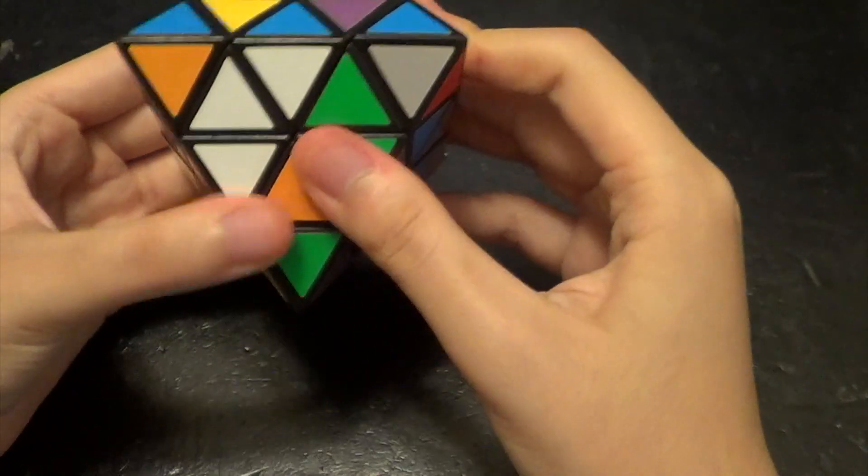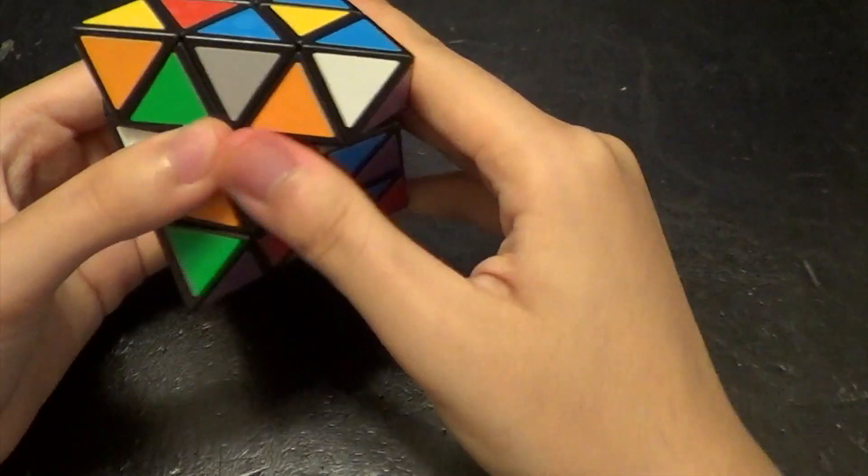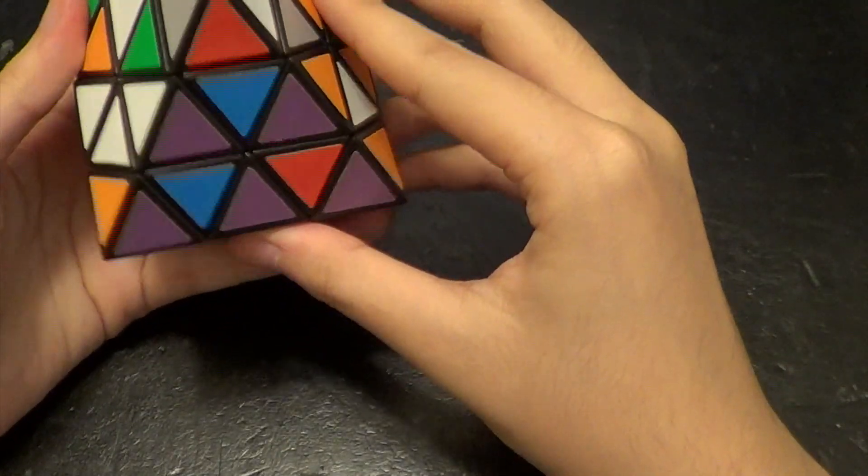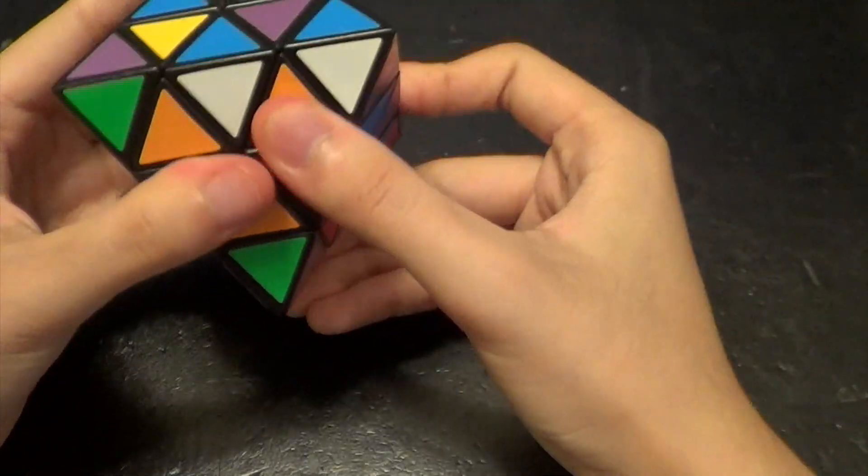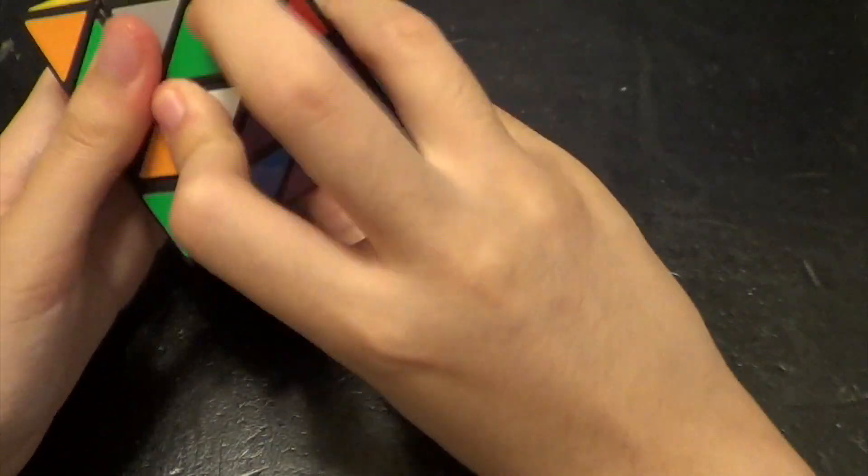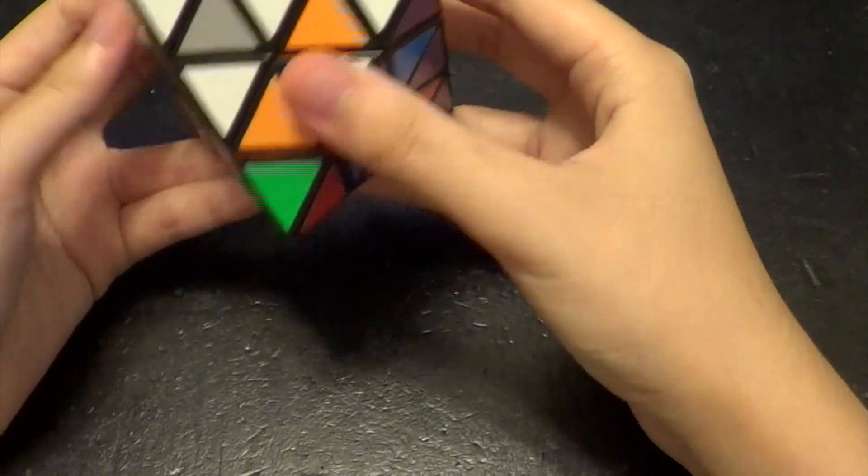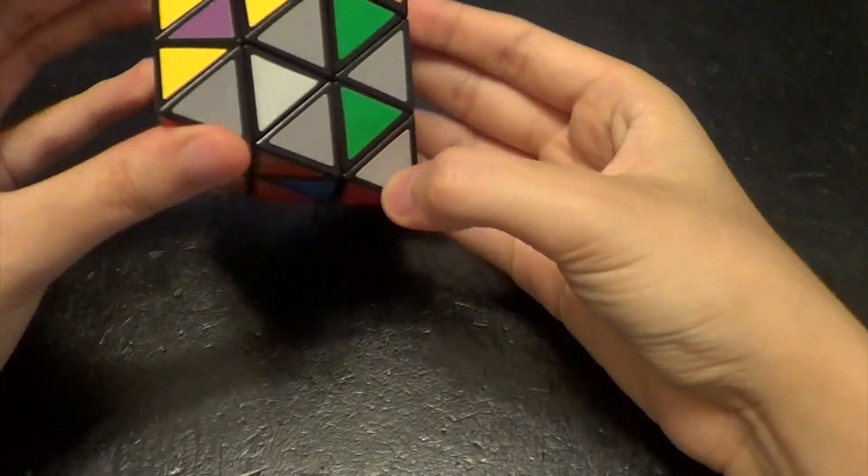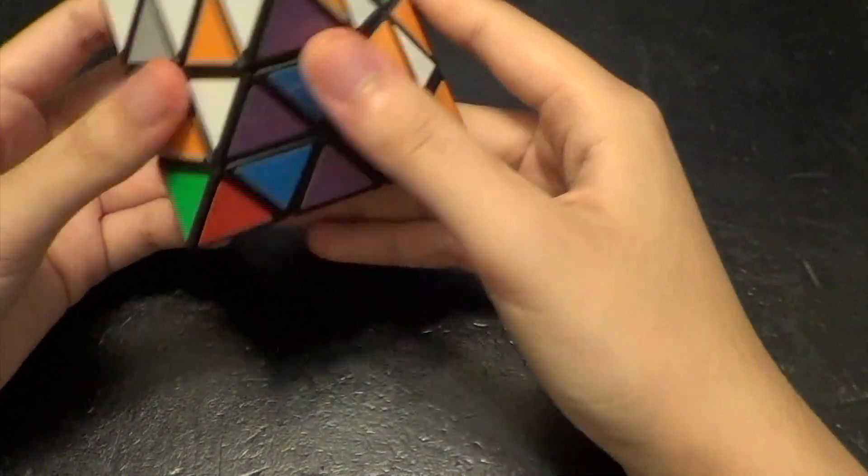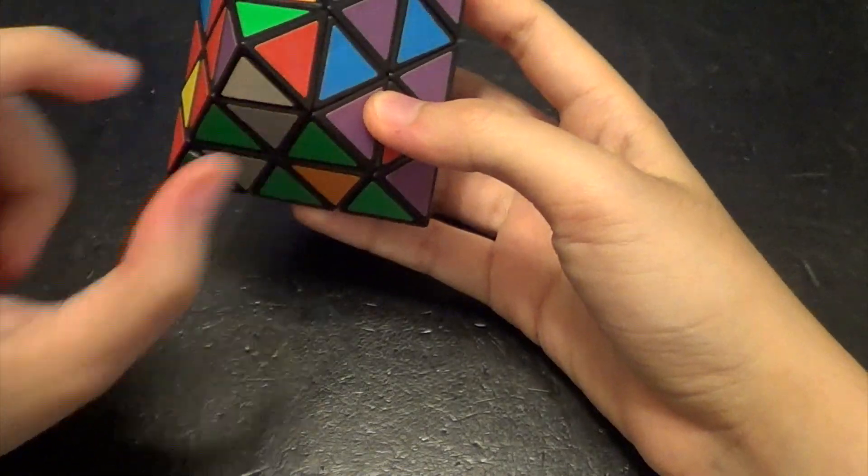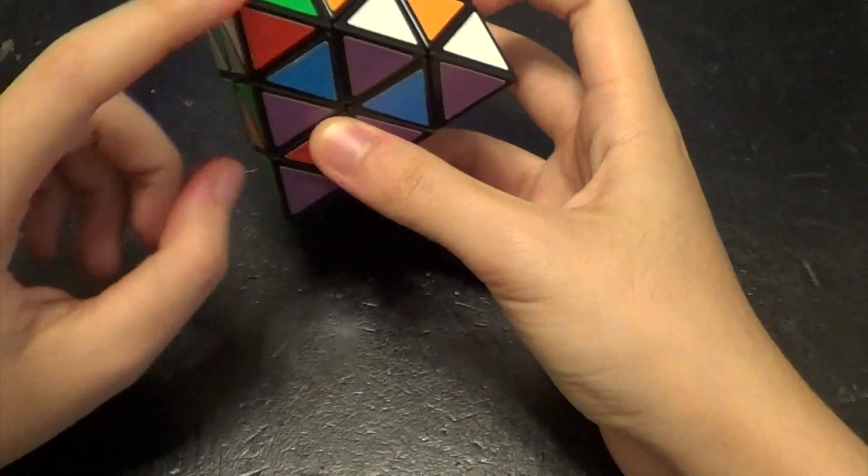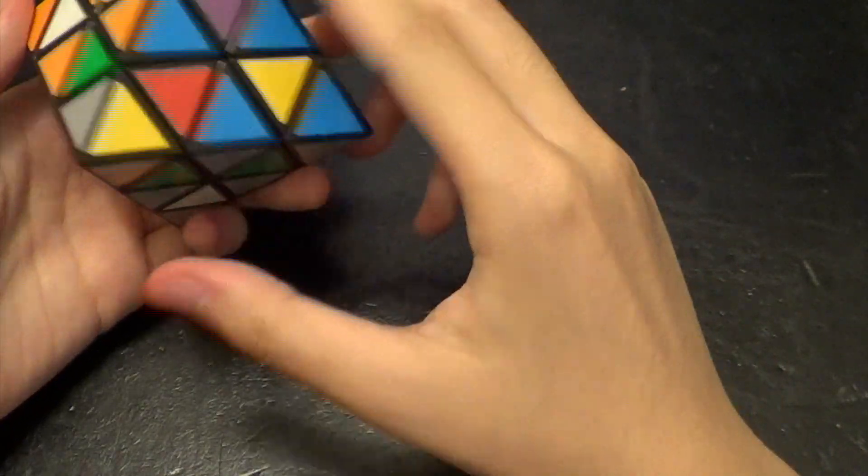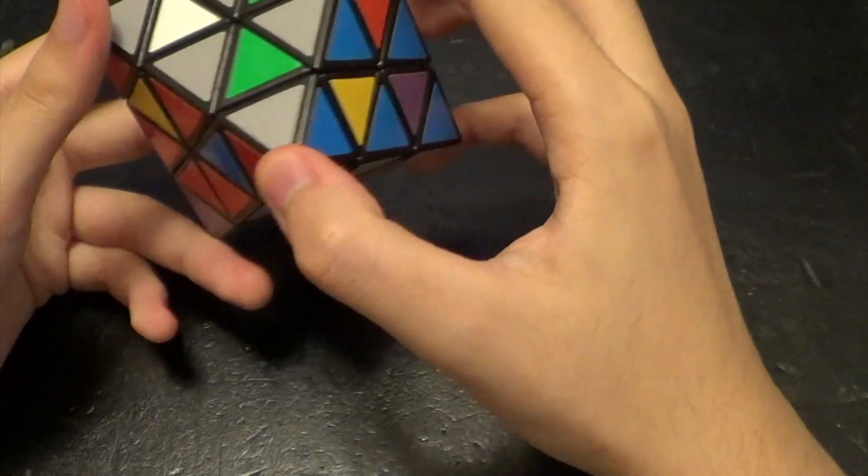So we would do R U' R' U, and then do it again, R U' R' U. So now you can see that these two pieces are now all in the correct place, and then this is also in the correct place, even though it's not the correct orientation, and that is it for all of the corners.